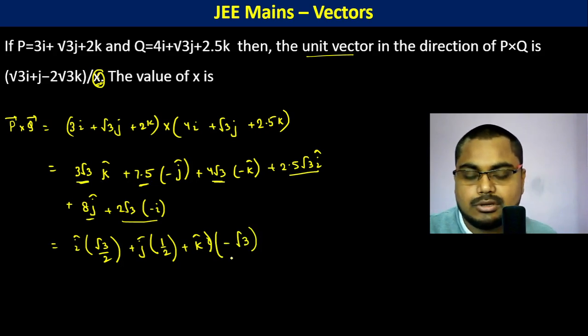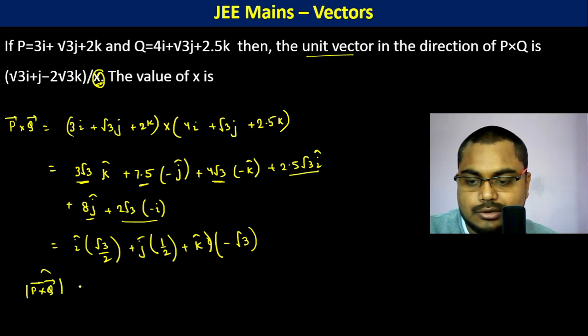Okay, so now this is the vector P cross Q. The unit vector in this direction. The magnitude will be root over 3 by 4 plus 1 by 4 plus 3, which is root over 4, which is 2.